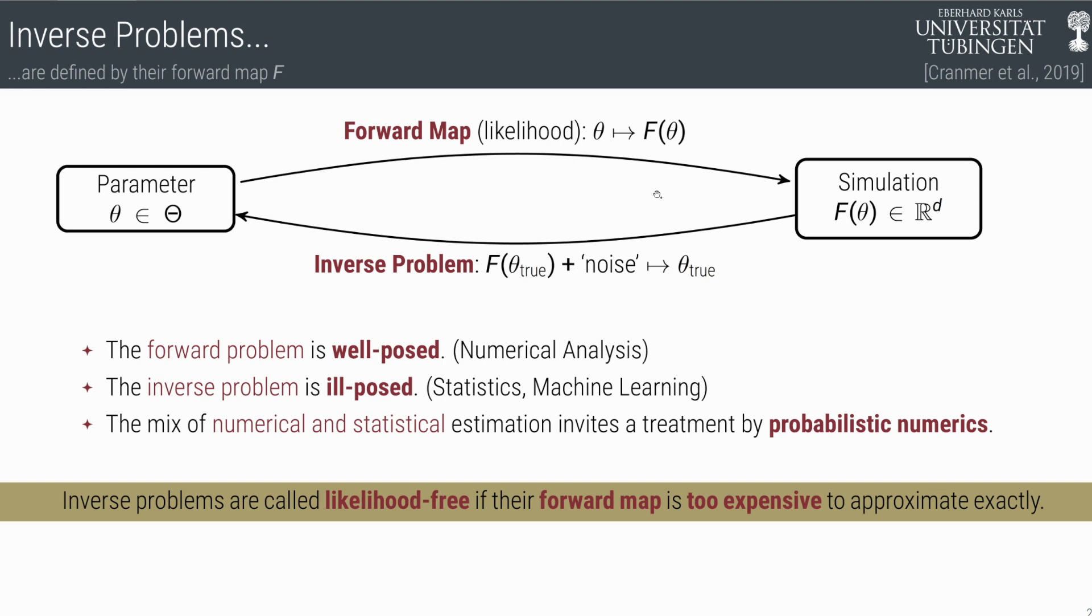Which means that for every θ, you get a well-defined f(θ), if you go from the left to the right. But if you go from the right to the left, there are parameters, let's say θ₁, θ₂, which are not equal, where f(θ₁) is equal to f(θ₂). Hence, it is ill posed.